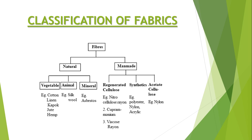Classification of fibers: fibers are made of two types — natural and man-made. Natural fibers fall into three categories: vegetable, animal, and mineral. Vegetable fibers include cotton, linen, jute, and hemp. Animal fibers include silk and wool. Mineral fibers include asbestos.